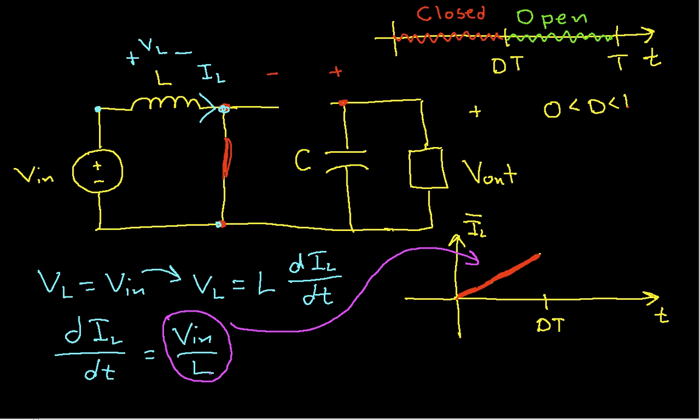So, to summarize, what happens when the switch is closed is that the inductor current starts at zero and ramps up to some value.